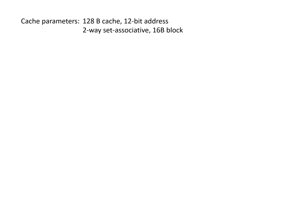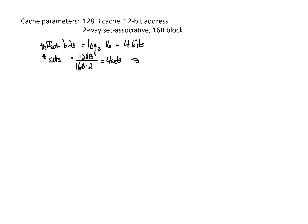Now we will consider a case where we have a two-way set associative cache, but instead of 32-byte blocks, we will have 16-byte blocks. For the number of offset bits, we need log base 2 of 16, which gives us 4 offset bits. For the number of sets, we take total capacity divided by block size divided by the number of ways, giving us 4 sets, which requires log base 2 of 4 equals 2 index (set) bits. Finally, for the number of tag bits, with 12 total bits we have 12 minus 4 minus 2, giving us 6 tag bits.